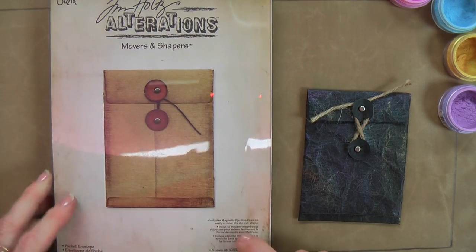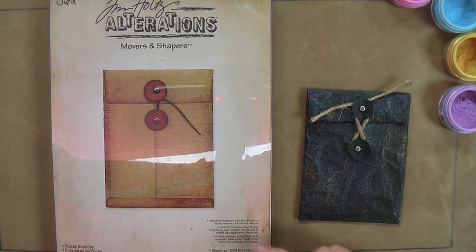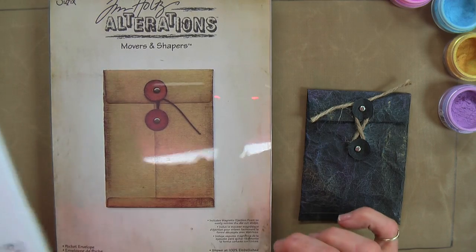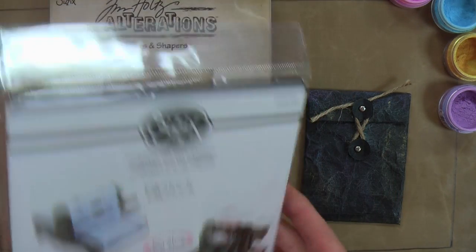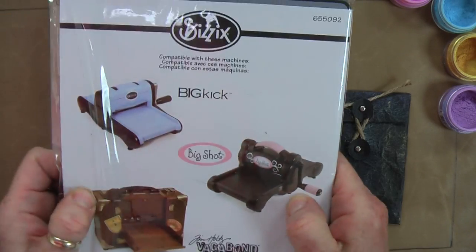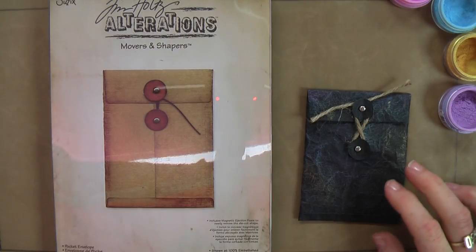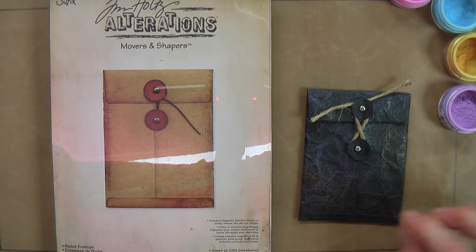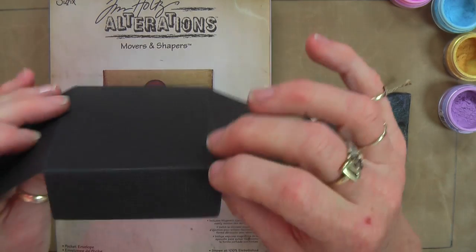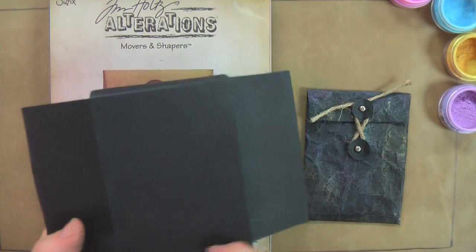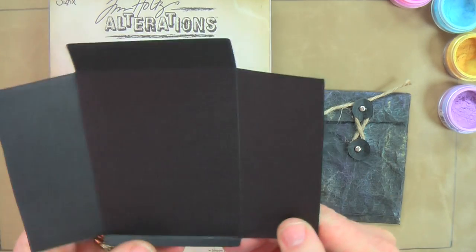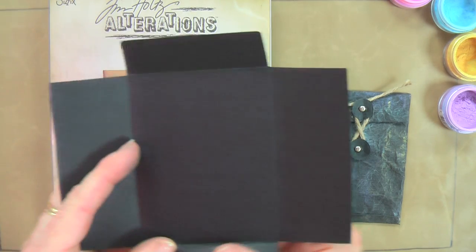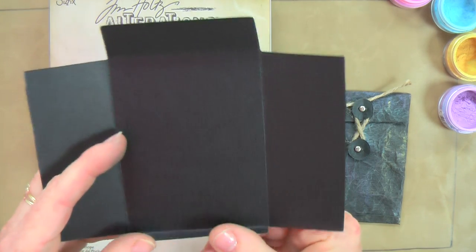When you use these dies you need to actually use it with a 1B cutting, one clear cutting pad and the Sizzix premium crease pad. This is like a black soft version of the clear mat. If you don't use that what will happen is it will split on the seams when you cut it. You do need the crease pad just so that it creases the lines rather than damages the card so that it rips apart.